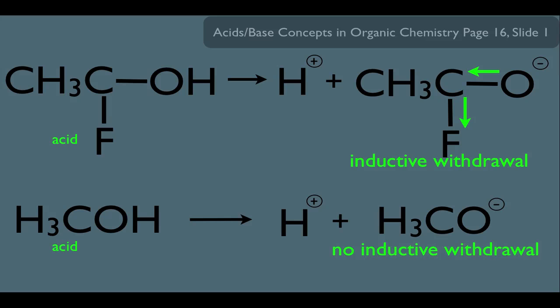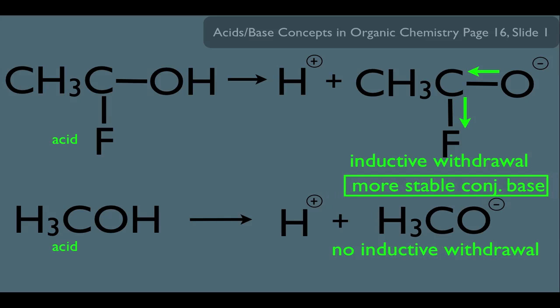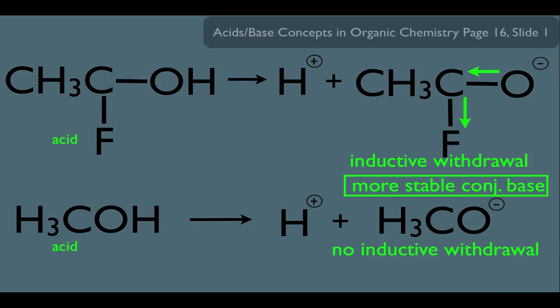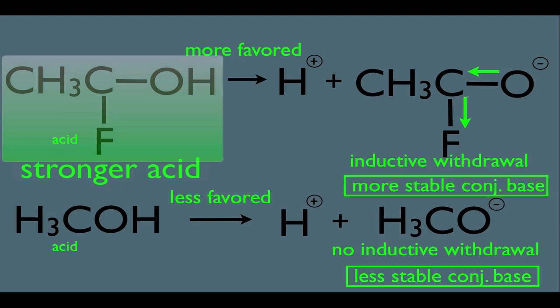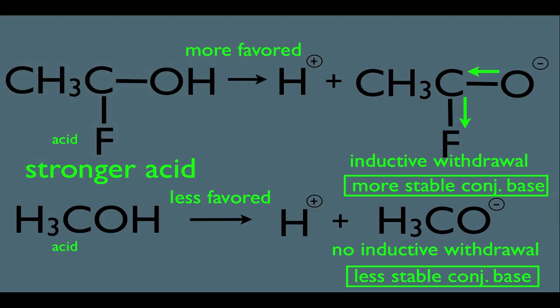Because of this, the top conjugate base is more stable and the bottom conjugate base is less stable. This means the top reaction is going to be more favored and the bottom reaction less favored. The top acid would therefore give up more H⁺, making it the stronger acid.